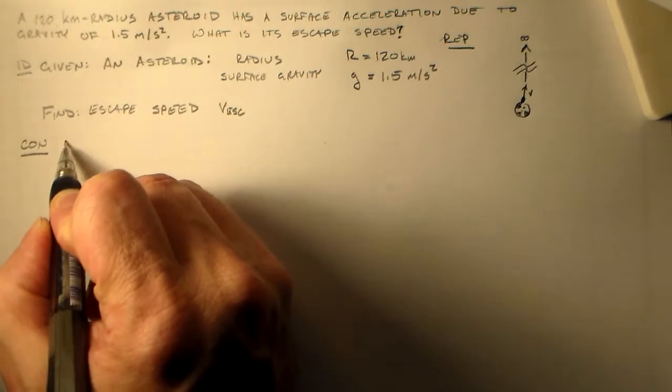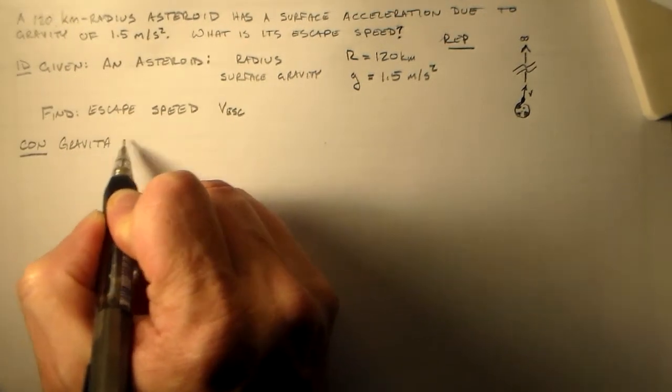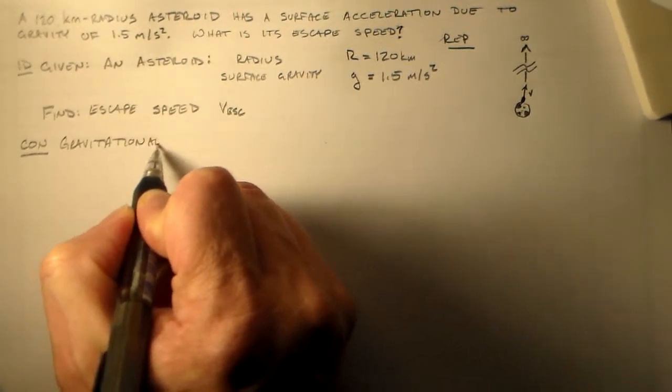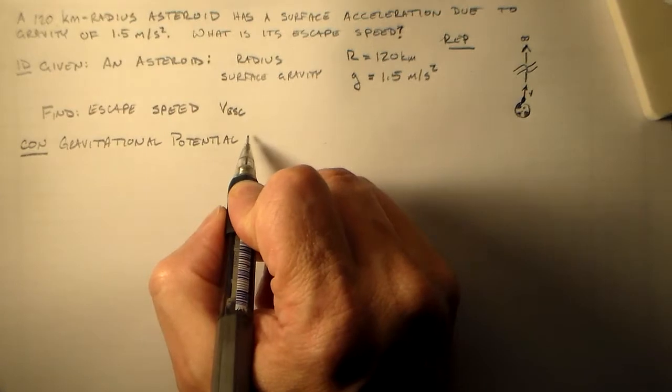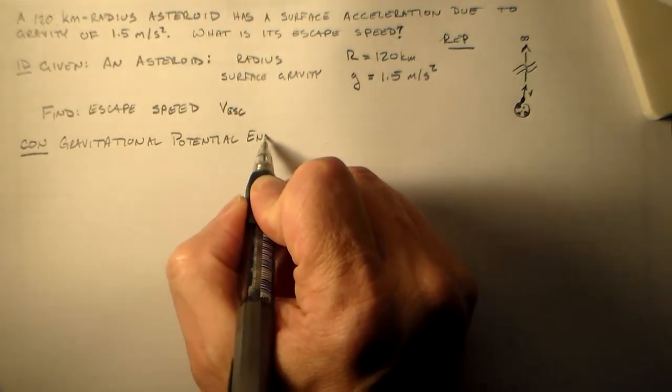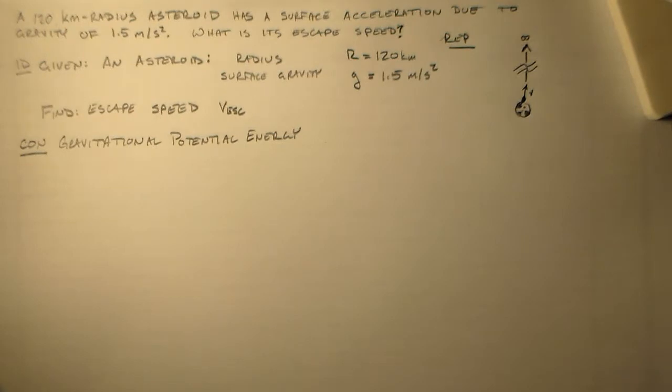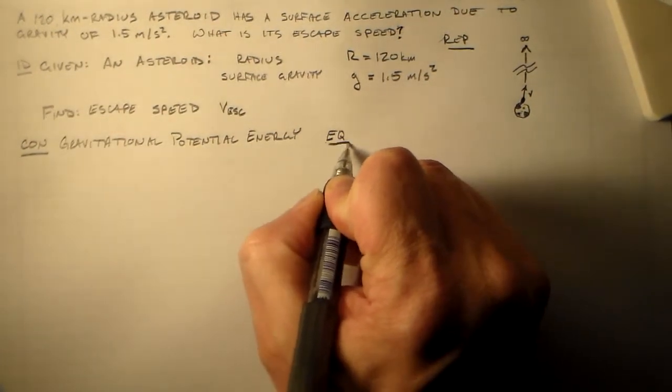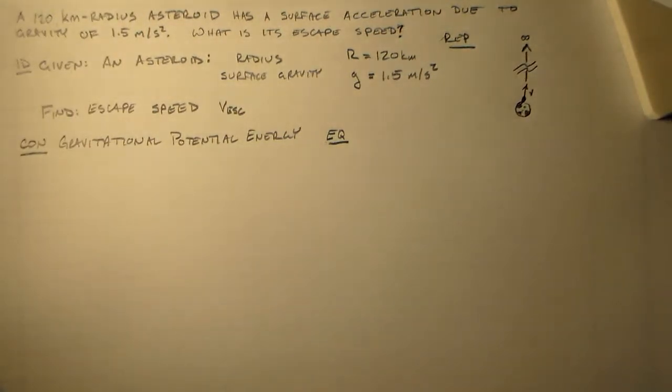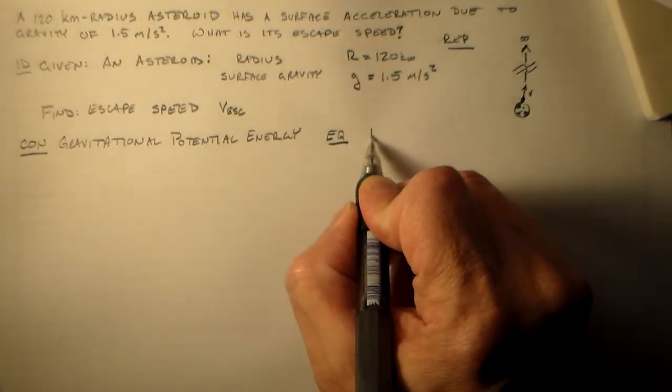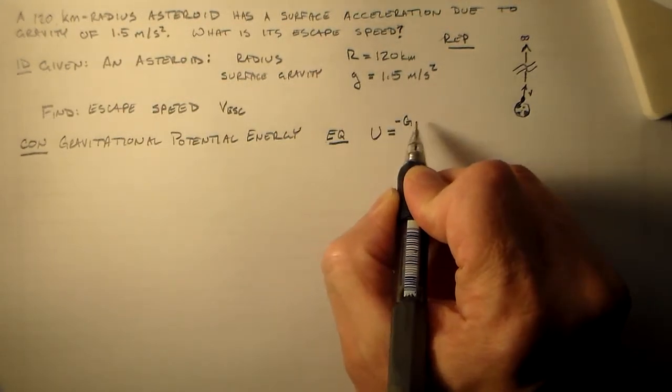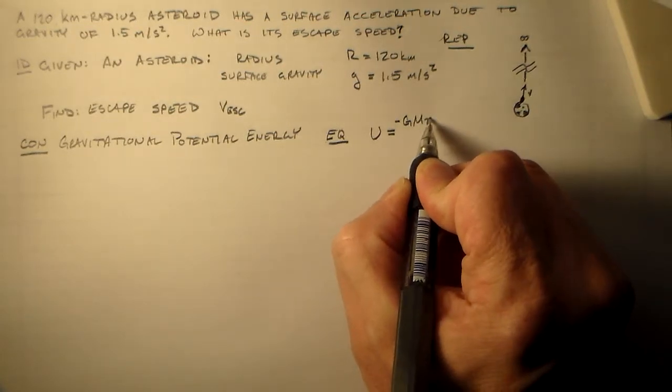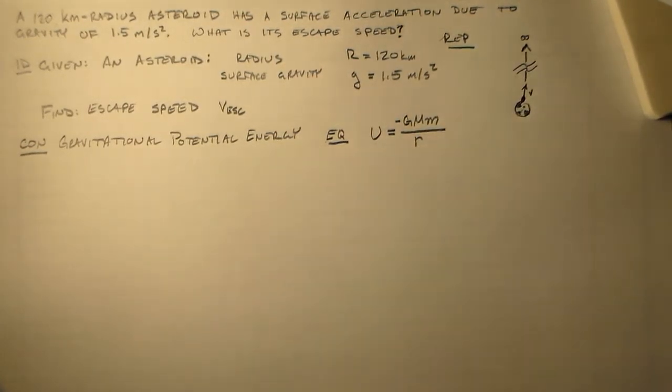So the concept here is the gravitational potential energy. I know in your book they have a whole section on the escape speed. But to be honest, it's more important that you know how to play with the gravitational potential energy than it is for you to know the equation for the escape speed. You should be able to figure out the equation for the escape speed on your own. On the other hand, something like the gravitational potential energy is fundamental. So you should know that no matter what.